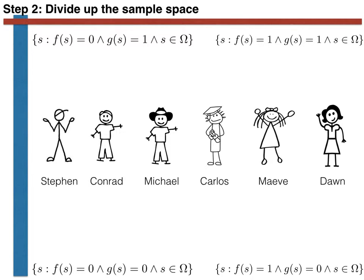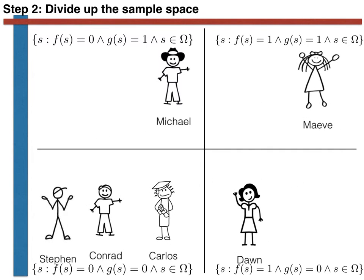We now divide up the members of the sample space accordingly. Maeve is the only member of the subset of girls with names beginning with M. Dawn is the only member of the subset of girls with names not beginning with M. Michael is the only member of the subset of boys whose name begins with M. And lastly, Carlos, Stephen, and Conrad are all members of the subset of boys whose names don't begin with M.